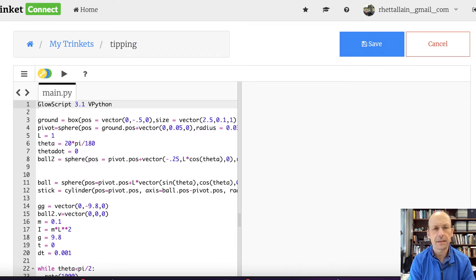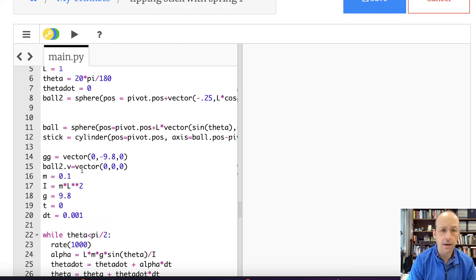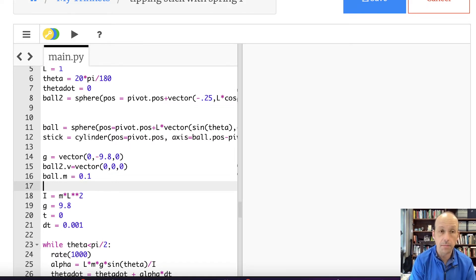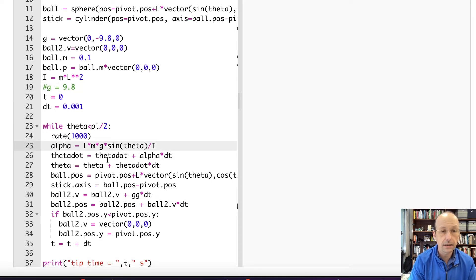So I still have the ground, I still have the pivot. I still have the length, I still have the starting angle. Theta dot, I don't actually need. Ball two is the dropping ball. The stick is still there. GG, I'm going to change that to G, just because I like that. Ball two, the mass, the moment of inertia, I don't actually need that. Now I'm going to need the initial momentum of the ball. So I'm going to say ball.P equals ball.M times vector zero zero zero. So start from rest. I'm going to just get rid of all that stuff right there.